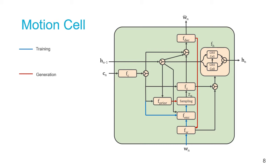The blue connections are only present during training and the red connections are only present for the generation phase.